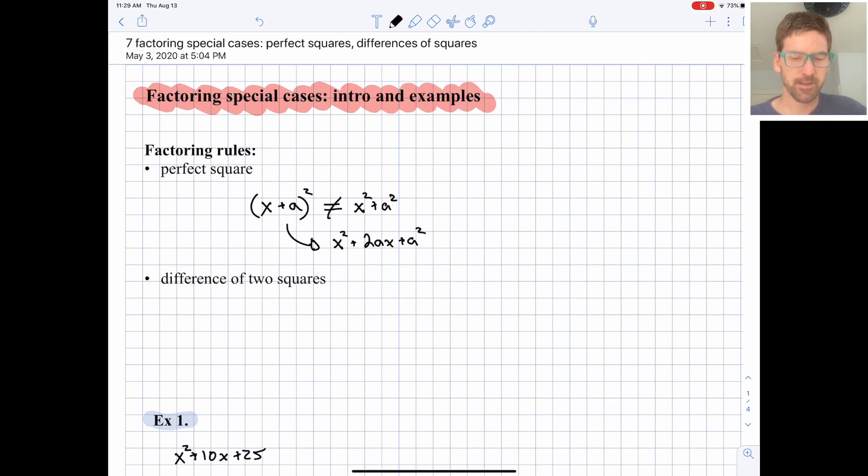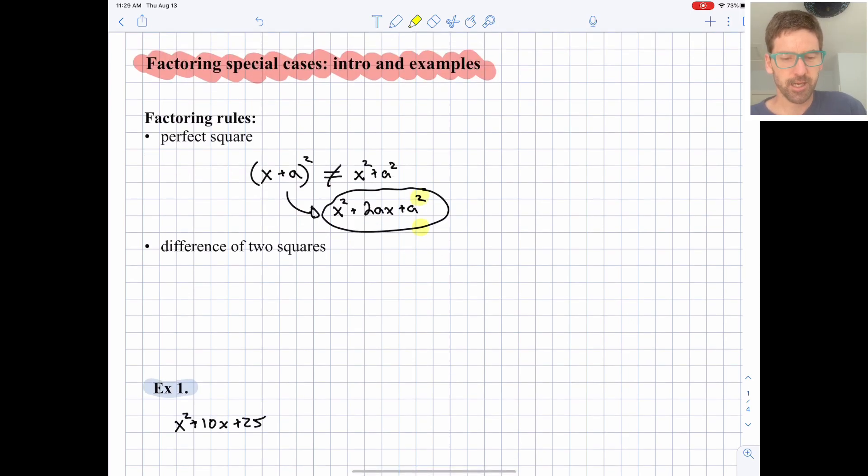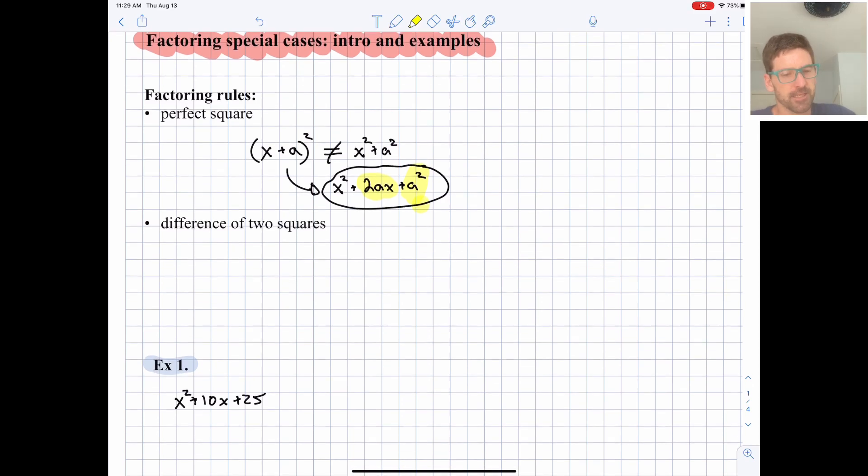If you see a pattern like this where the constant term is a perfect square and you find the square root of it and you double it and you can get the middle term, then you know you're working with a perfect square trinomial.